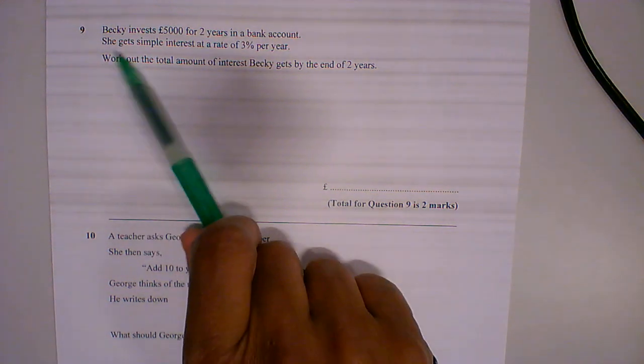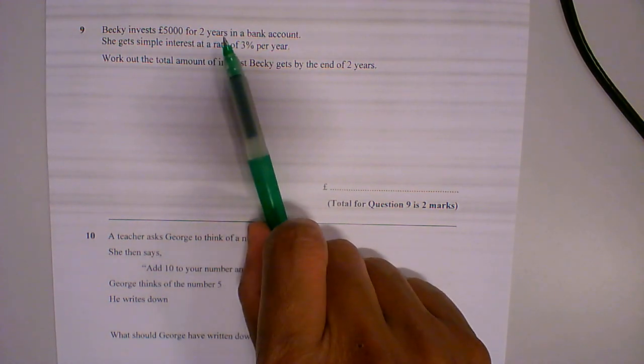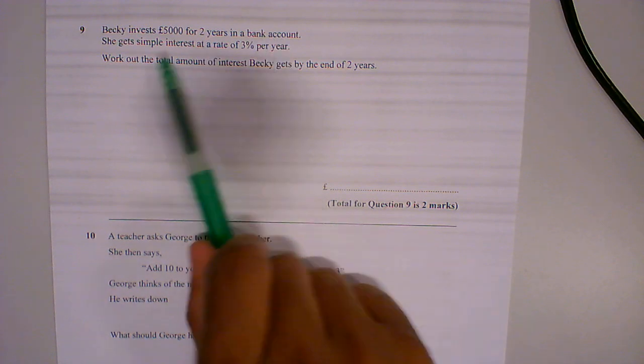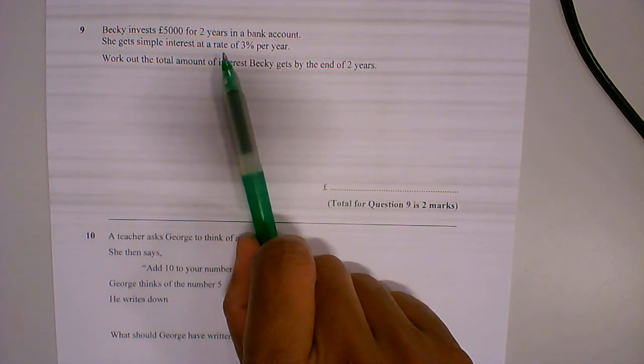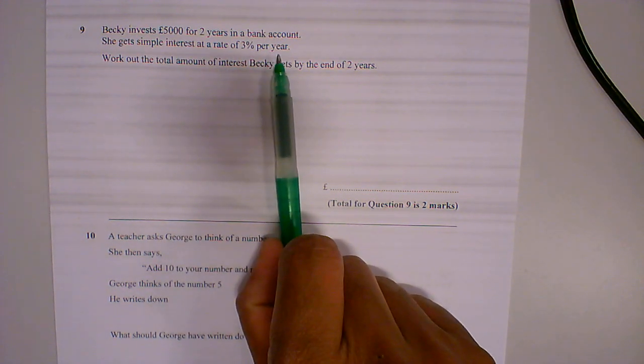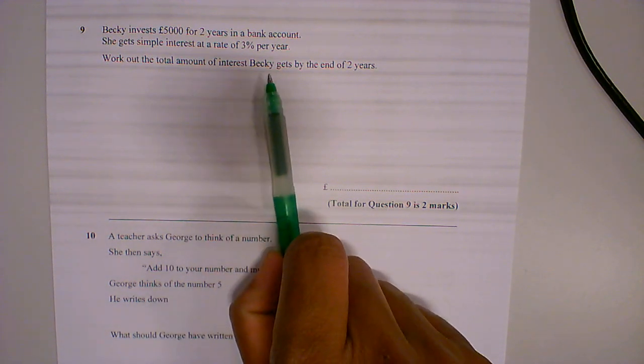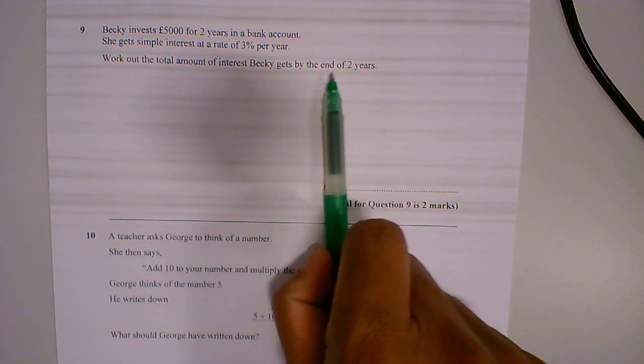Question 9. Becky invests £5,000 for two years in a bank account. She gets simple interest at a rate of 3% per year. Work out the total amount of interest Becky gets by the end of two years.